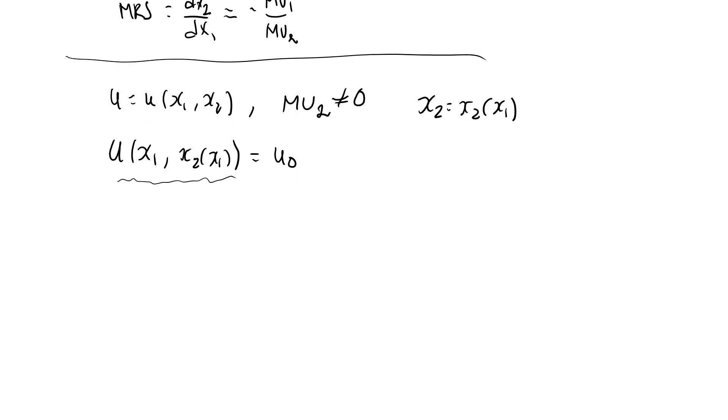This part here is now just a function of one variable, namely x1, since x2 depends directly on x1. So what I can do is I can simply differentiate both sides with respect to x1. If I differentiate the left-hand side with respect to x1, then by the chain rule, that will become partial u partial x1 times the derivative of x1 with respect to itself, so that's just one, plus partial u partial x2 times the derivative of x2 with respect to x1, that's dx2 dx1.